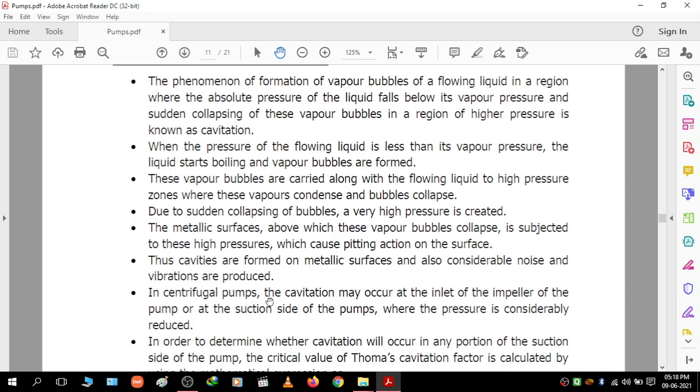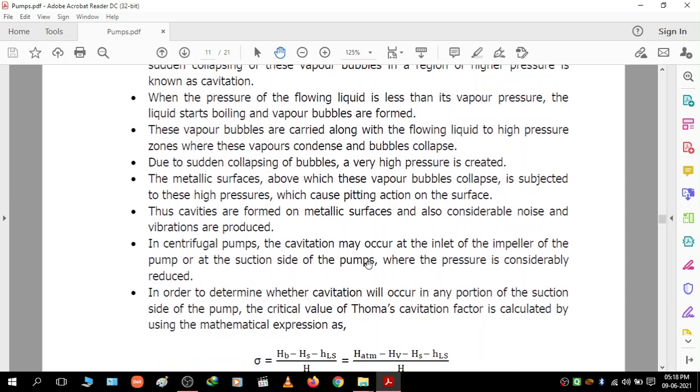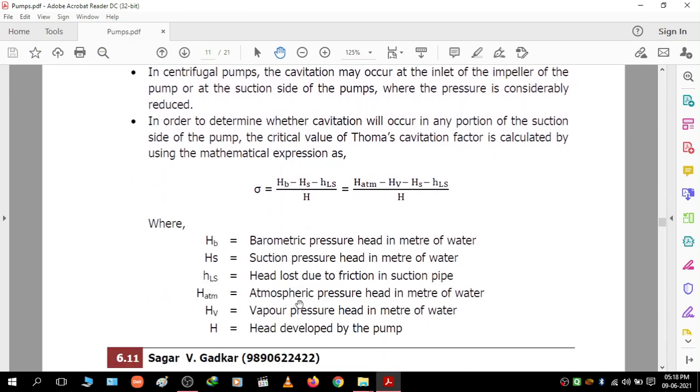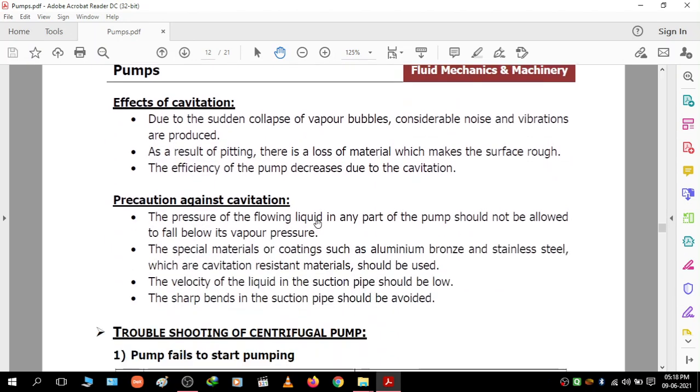In centrifugal pumps, the cavitation may occur at the inlet of the impeller or at the suction side of the pumps where the pressure is considerably reduced. The cavitation factor is calculated using specific equations. Due to the sudden collapse of vapor bubbles, considerable noise and vibrations are produced. As a result of pitting, there is loss of material which makes the surface rough. The efficiency of the pump decreases due to cavitation.